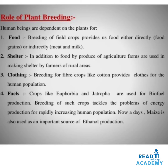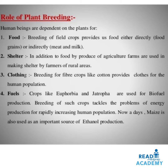What is the role of plant breeding? Human beings are dependent on plants. For food, breeding of field crops provides us food either directly through food grains or indirectly through meat and milk. For shelter, farms are used in making shelter by farmers of rural areas. For clothing, breeding for fiber crops like cotton provides clothes for the human population. For fuels, crops like Euphorbia and Jatropha are used for biofuel production, tackling problems of energy for the rapidly increasing human population. Nowadays maize is also used as an important source of ethanol production.